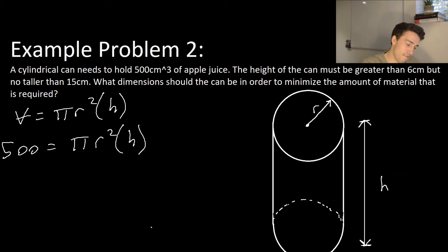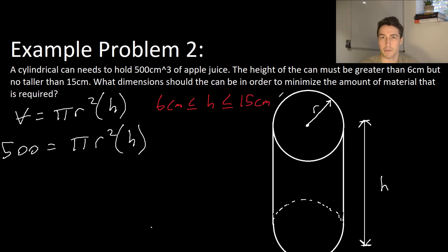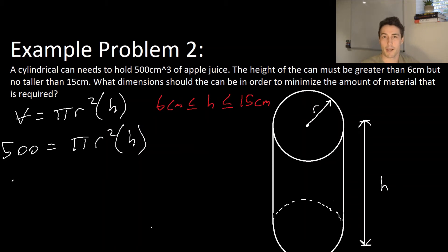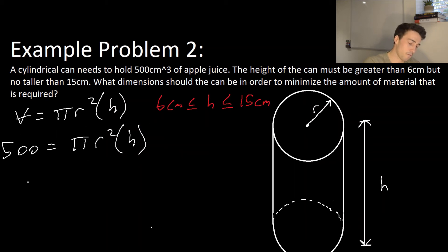I'll also state that we have a restriction on the height: H must be between 6 centimeters and 15 centimeters. That's a constraint we need to make sure we meet. Now the surface area is what we're trying to minimize because we're minimizing the amount of materials needed. Using the constraint function, I'm going to go to step two and solve for a variable. Solving for H gives H equals 500 divided by pi r squared.